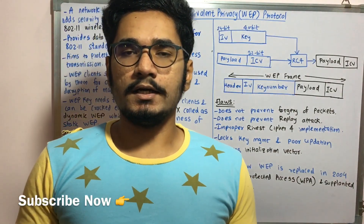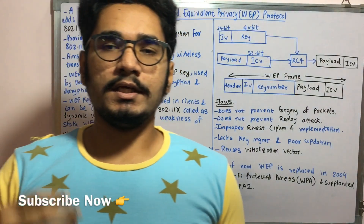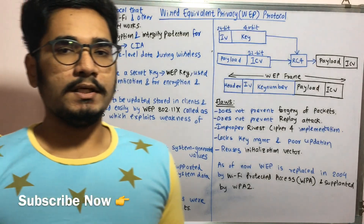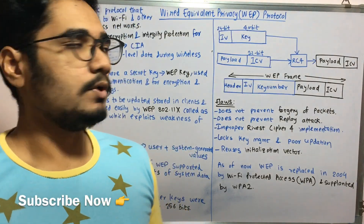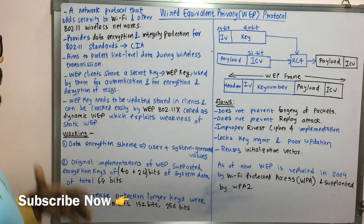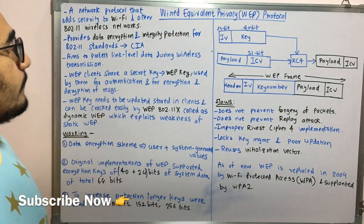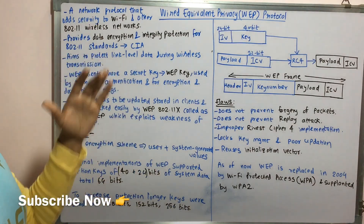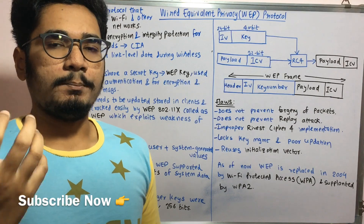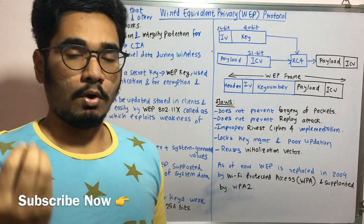This protocol is basically designed in order to provide security for wired systems. But in wireless technology, there have been found a few kinds of challenges with WEP. This WEP protocol is a network protocol that adds security to Wi-Fi systems and other 802.11 wireless networks. From the name, you can see that wired equivalent privacy means it provides privacy equivalent to wired systems like cable or Ethernet, and it aims to provide that kind of security to all wireless systems.